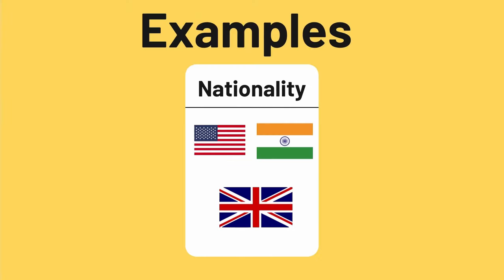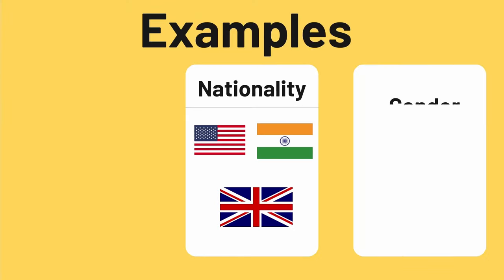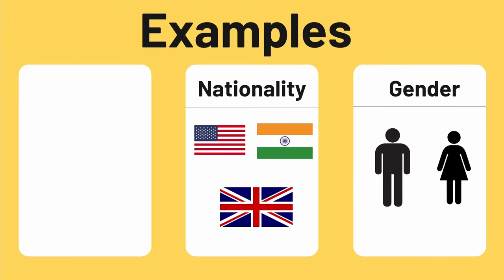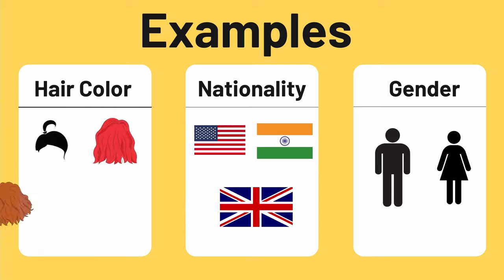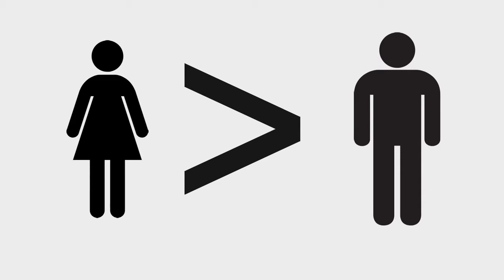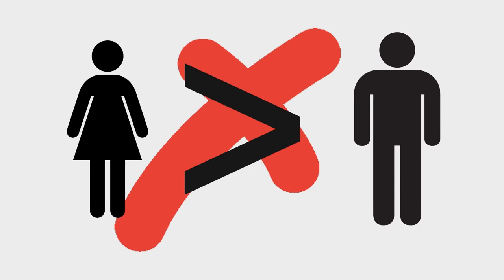Examples of nominal data include nationality, gender, and hair color. As you can see, this type of data cannot be ranked or ordered. In the case of gender, for instance, we cannot say that females are greater than males or vice versa.